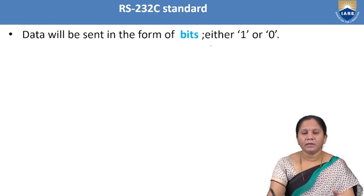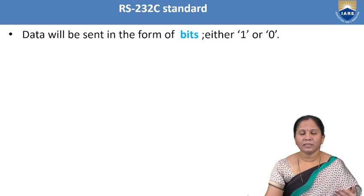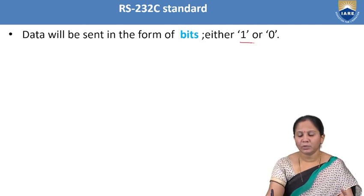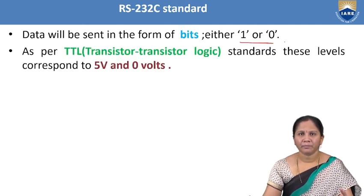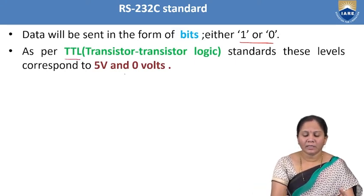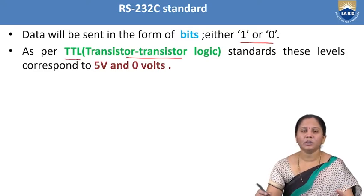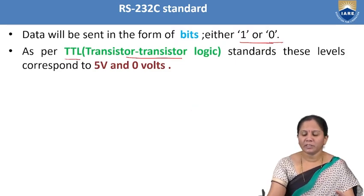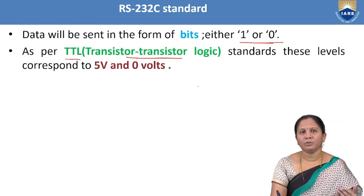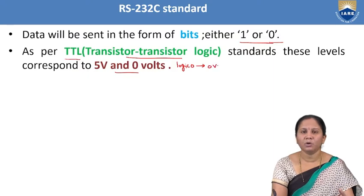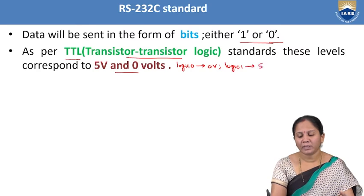Data will be transmitted in the form of bits, which represent 0 and 1. As per TTL — transistor-transistor logic — these levels correspond to 0 volts and 5 volts. Logic 0 is represented with 0 volts in TTL, and logic 1 is represented with 5 volts.